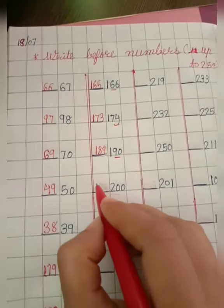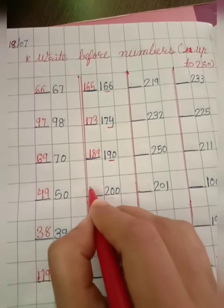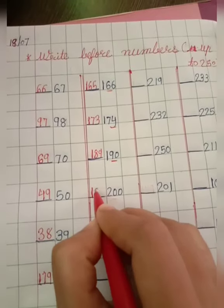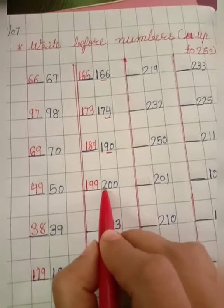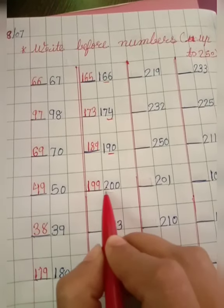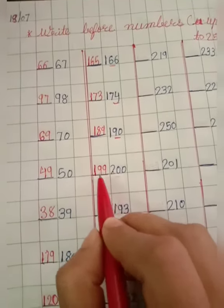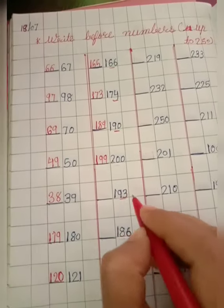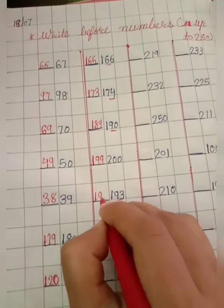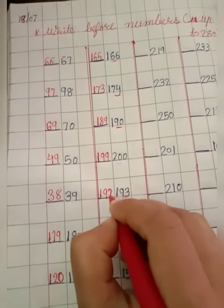200, so 200. 100, so 99. 2, so 1. So 199. Once again, 2 before 1. 200, so 100 before 99. So 199. 193. So 93 before 92. Okay, so 192.